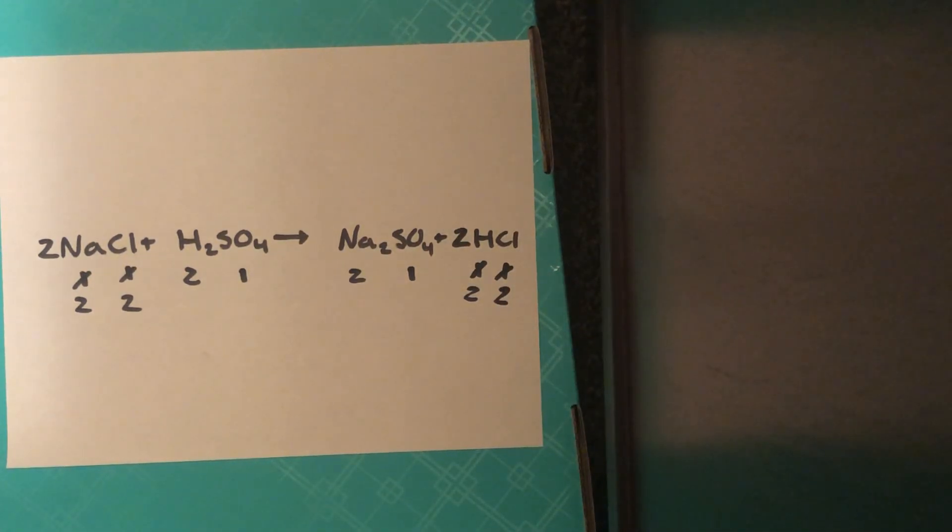Now let's see if everything matches up. Two sodiums on reactants and products, two chlorines on reactants and products, two hydrogens on reactants and products, and one sulfate on reactants and products. That is our balanced equation.